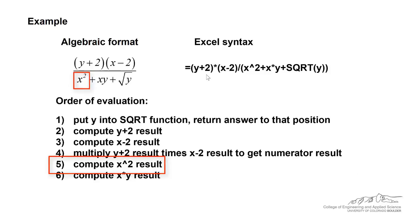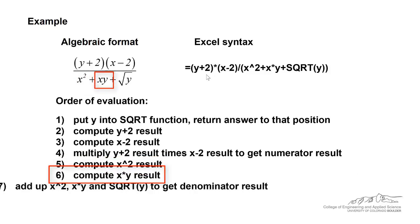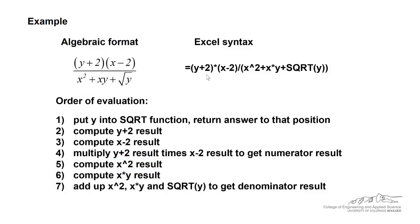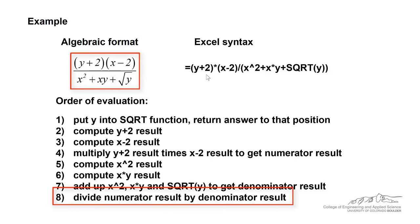And then it computes X squared. It computes the X times Y. Then it adds up the X squared, X times Y, and the square root to get a denominator result. And then finally it divides the numerator result by the denominator result to get an answer.